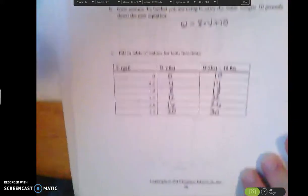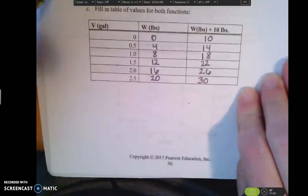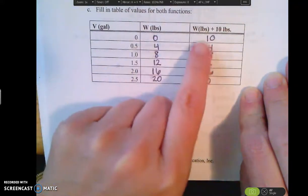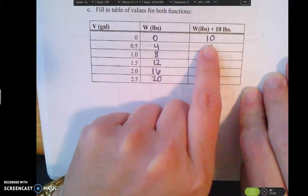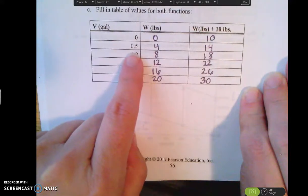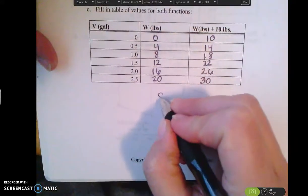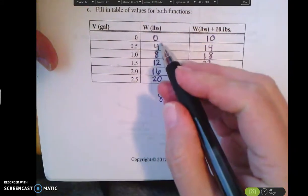So what happens is I have this chart. So what if the gallons was 0, then that means my weight here would be 0 but my weight here would be 10 pounds because I still have that rock in the bottom. And then if I put in half a gallon, if I substitute that into 8 times 0.5 I get 4. And if I do 8 times 0.5 plus 10 I get 14.